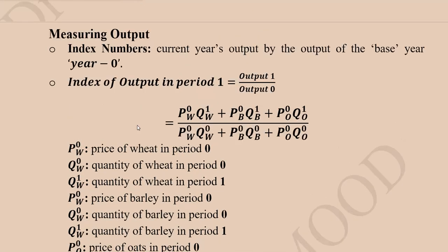The next topic is the measurement of output, since the production process gives us output. One well-known way to measure it is the index number, which indicates the comparison between the current level of output and a previous level. The base year — denoted with superscript 0 — is the year used for comparison, while the current time period is represented by 1. Output in the current period divided by output in the base period gives us this index number.